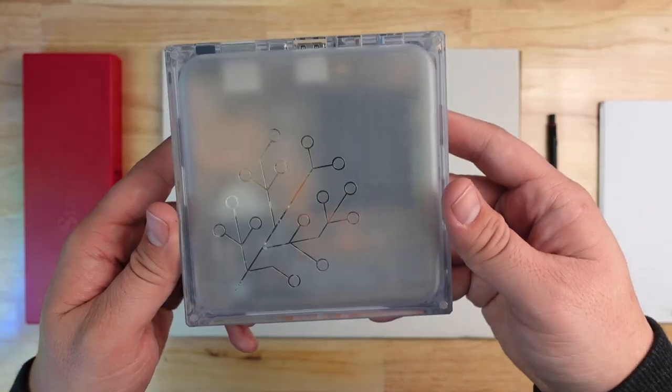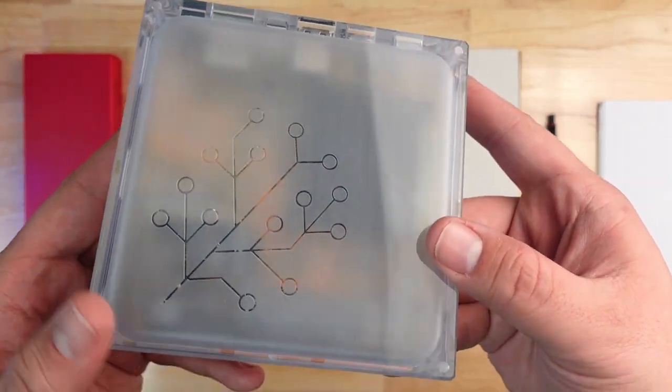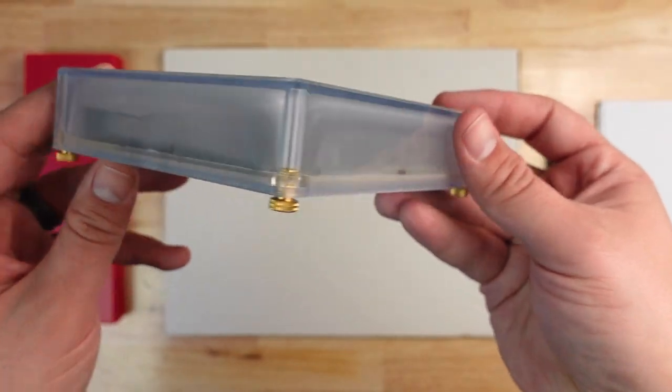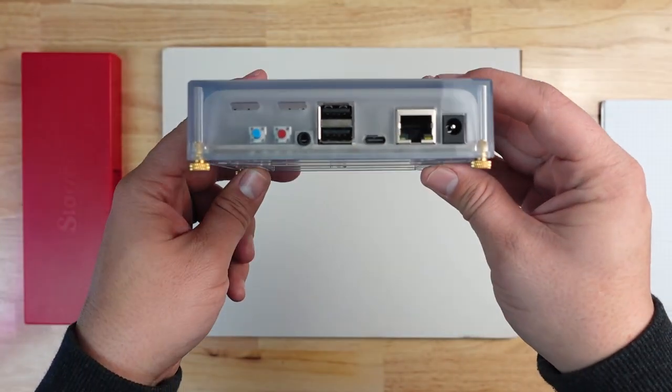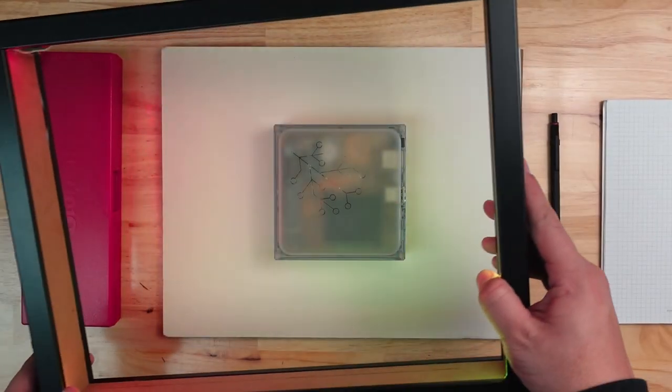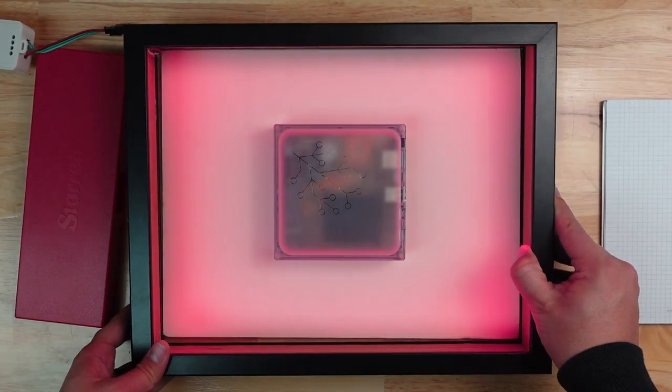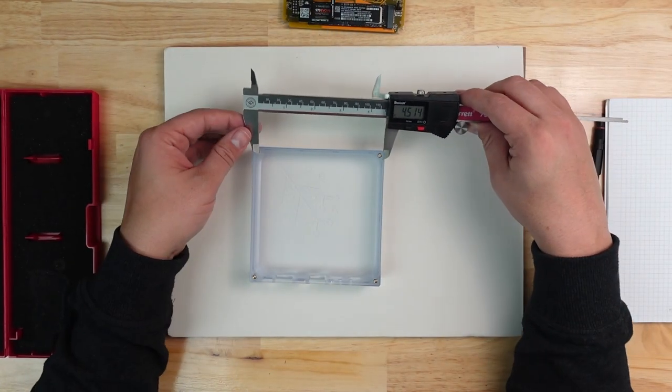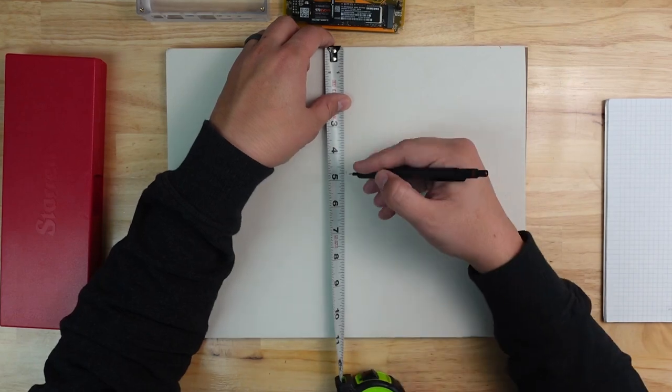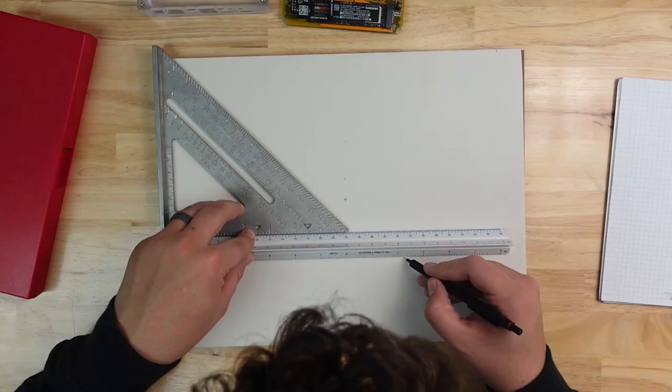So now it's time to mount the home assistant yellow. The yellow has four knurled thumb screws that hold the case together and I thought the holes they screwed into would be useful when mounting the yellow to the backer. I wanted to mount it directly to the center of the backer so I removed the case and then measured the distance between the holes. I found the center of the backer and then plotted out exactly where the holes should be on the backer.